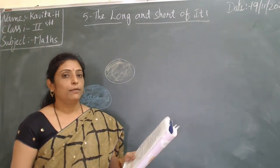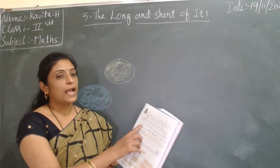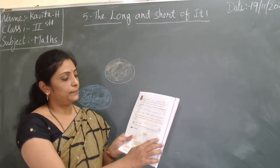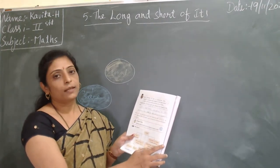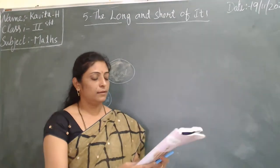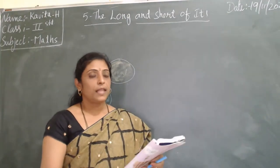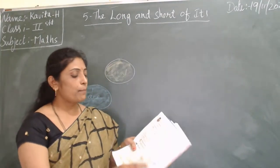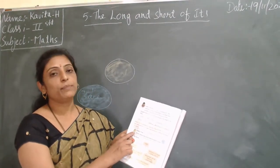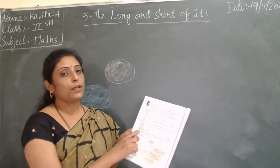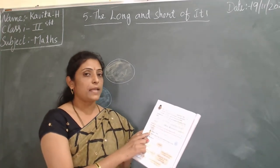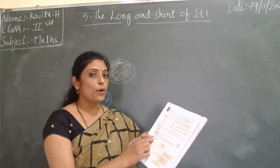When it is not possible to use fixed measures like centimeter or meter, we use measures like foot span, cubit, and so on to measure the length of objects. You have to write the answer in the blanks.